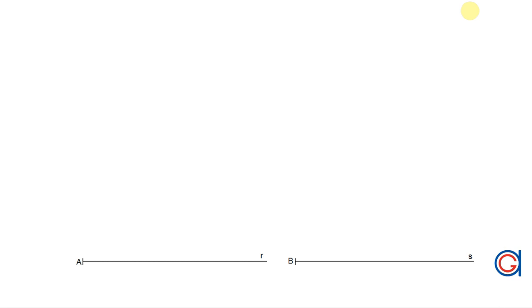Hello, in this video we are going to learn how to draw the most used angles using only a compass and a ruler. As you can see on the bottom of the screen we have two rays R and S, starting at point A and B respectively.